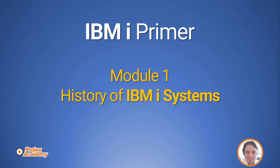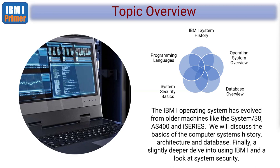Let's start with module one. It's always good to start at the beginning with a brief high-level overview of the history of IBM i systems. The IBM i operating system has evolved from older machines like the System 38, the AS400, and the iSeries. In module one, we're going to discuss the basics of computer systems history, its hardware and architecture, and database. Then we'll delve into using IBM i, including logging on to a terminal and going through some basic commands.